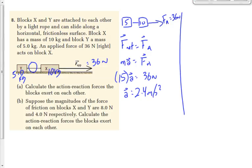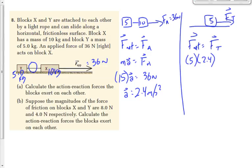That's half the battle. Once we have the acceleration of the system, we know the acceleration of each object within it. Let's analyze object Y — it seems easiest because it has fewer forces. We've got a 5-kilogram object being pulled to the right by the rope tension — that's what we're looking for. F_net equals the sum of forces; there's only one. F_net equals 5 times 2.4. We don't use the total mass of 15 because we're analyzing only one object. 5 times 2.4 equals 12 newtons. How many people got 12 newtons? If you analyzed the 10-kilogram object, you'd get negative 12 newtons — a force to the left — but both are correct.